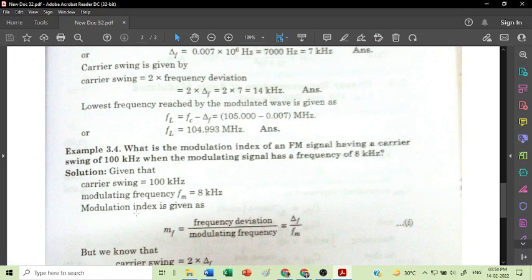The formula of modulation index in frequency modulation is: modulation index is the ratio of frequency deviation to the modulating frequency, delta F by Fm.